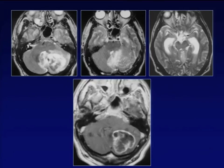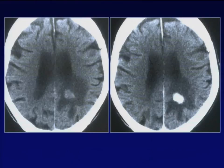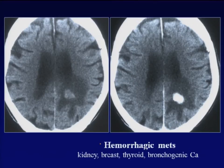In the posterior fossa, it's very important — as I say to residents: the first, second, and third differential is metastatic disease in the posterior fossa in adults if we see a tumor. This tumor produces displacement and mass effect; you can see signs of hydrocephalus, dilatation of the temporal horns. Sometimes we may have hemorrhagic metastatic disease on pre- and post-contrast CT — typical hemorrhagic mets from kidney, breast, thyroid, and bronchogenic carcinoma.